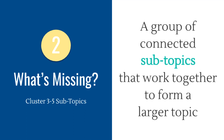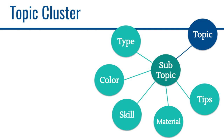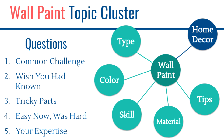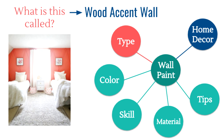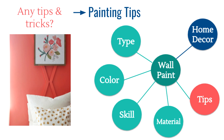Part two is Topic Clusters. A topic cluster is a group of connected subtopics that work together to form a larger one. Cluster your reader's problems into subtopics. A new painter doesn't realize how many questions she's going to have when starting a room makeover. So let's point out a few subtopics using the main topic of wall paint — we'll list the type, color, skill, material, and some tips. Simply identify which of our questions apply to each topic cluster. For instance, wood accent wall would be the type. Bedroom wall color is the color. How to paint a wall is the skill. How to cut wood molding is the material. And that leaves painting tips. We have identified several problems already.